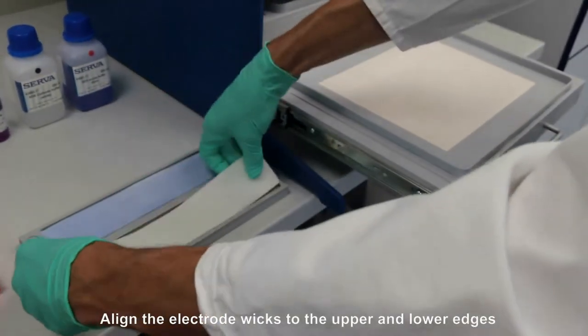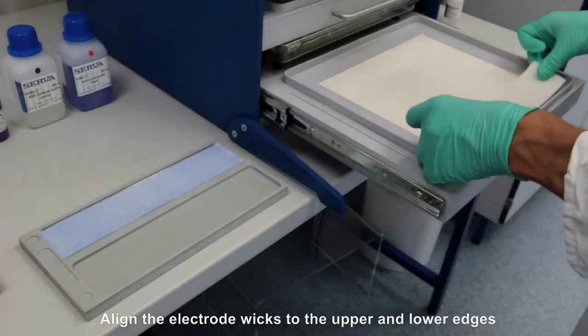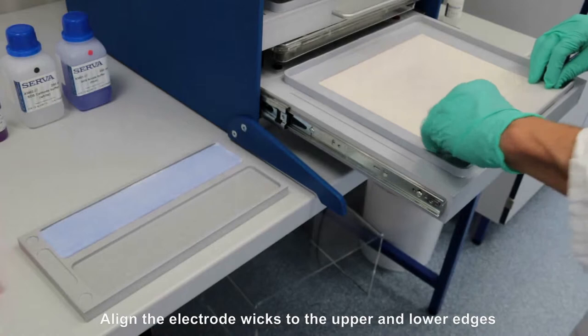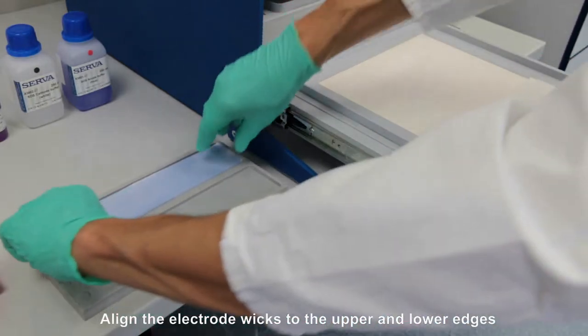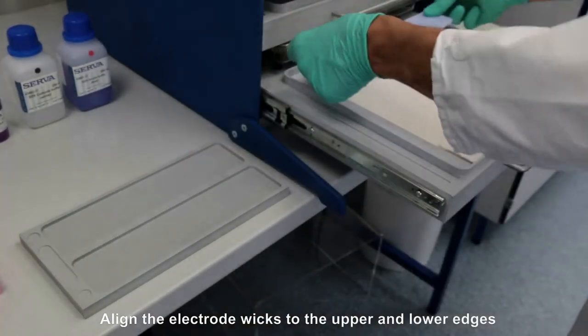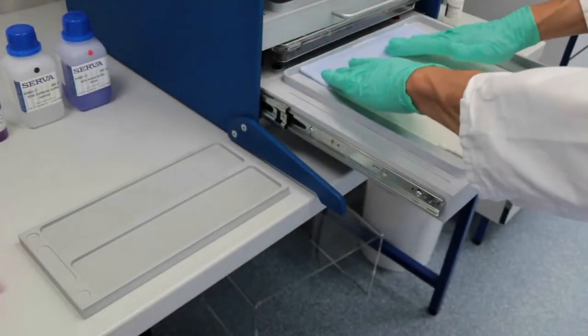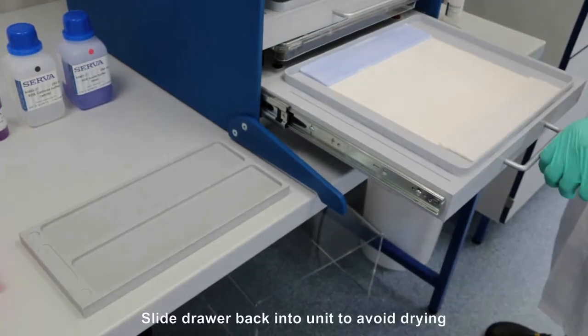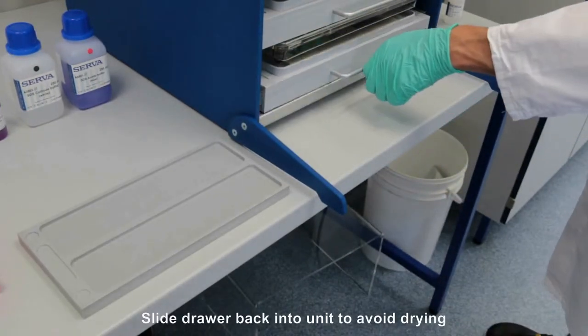Align the electrode wicks to the drawer's upper and lower edges. The wicks will overlap the gel by approximately 2mm. Slide the drawer back into the unit to avoid drying.